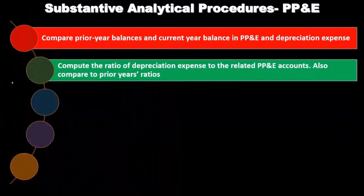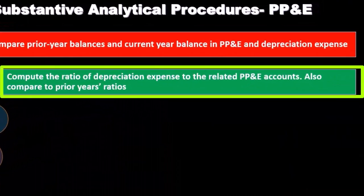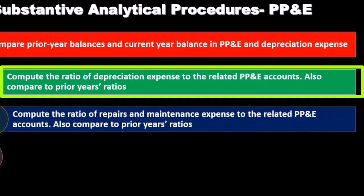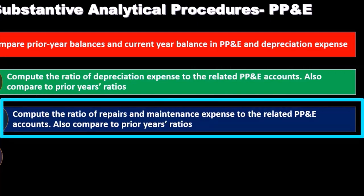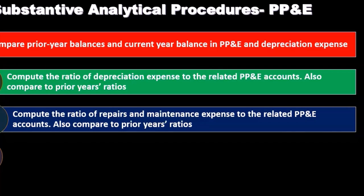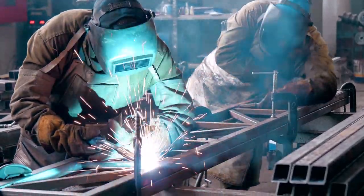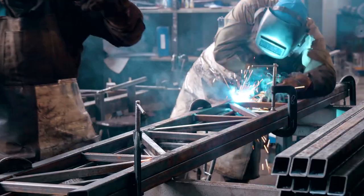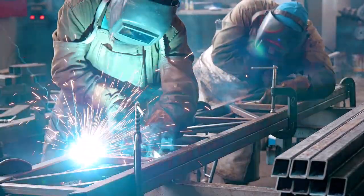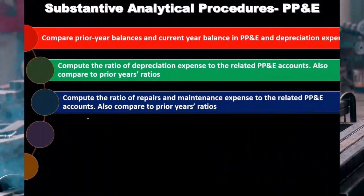We can compute the ratio of depreciation expense to the related PP&E accounts and compare that to prior year ratios. We can also compute the ratio of repairs and maintenance expense to the related PP&E accounts. This is important because we want to consider whether something recorded to repairs and maintenance should have been capitalized — for example, if they completely overhauled a piece of equipment, it may represent an improvement that should be capitalized as part of the asset rather than expensed.